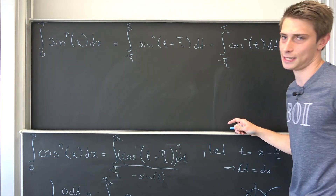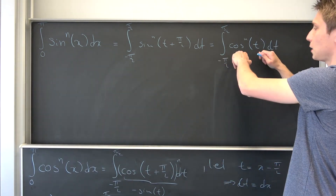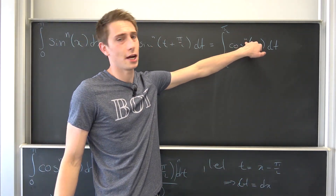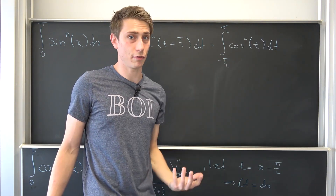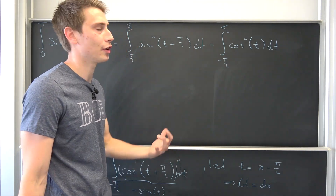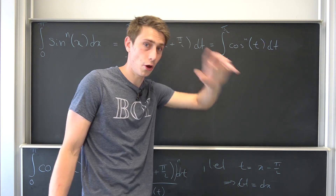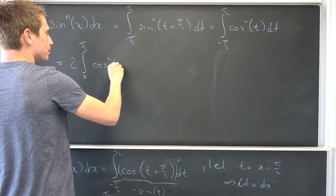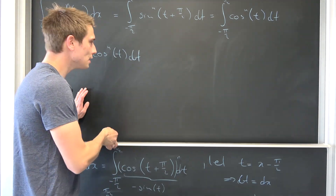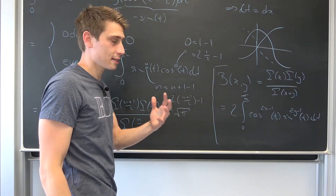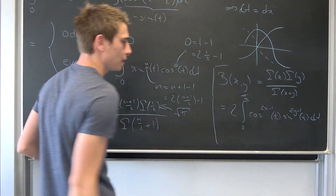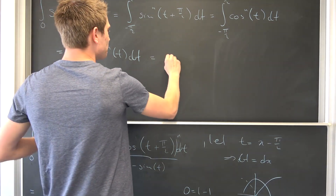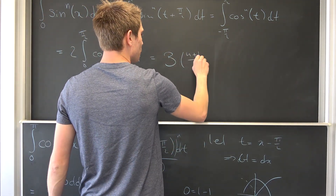Here we do case work again: n odd and n even. The really cool thing about cosine is that it is an even function — cosine of negative t equals cosine of t. So no matter if n is even or odd, an even function to any power is still an even function. Meaning this integrand in all cases is even, giving us 2 times the integral from 0 to pi over 2 of cosine to the nth power of t, dt. By the same arguments as before, we end up with beta of (n+1)/2 comma 1/2.